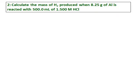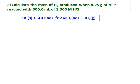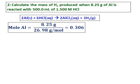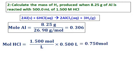Calculate the mass of hydrogen produced when 8.25 grams of aluminum reacts with 500 milliliters of 1.5 molar HCl. Let's start the question by writing the equation and remember to always balance the equation. The concentrations are not given. Hence, first calculate the limiting agent for the reaction. The moles of aluminum comes as 0.306 and moles of hydrochloric acid comes as 0.750.